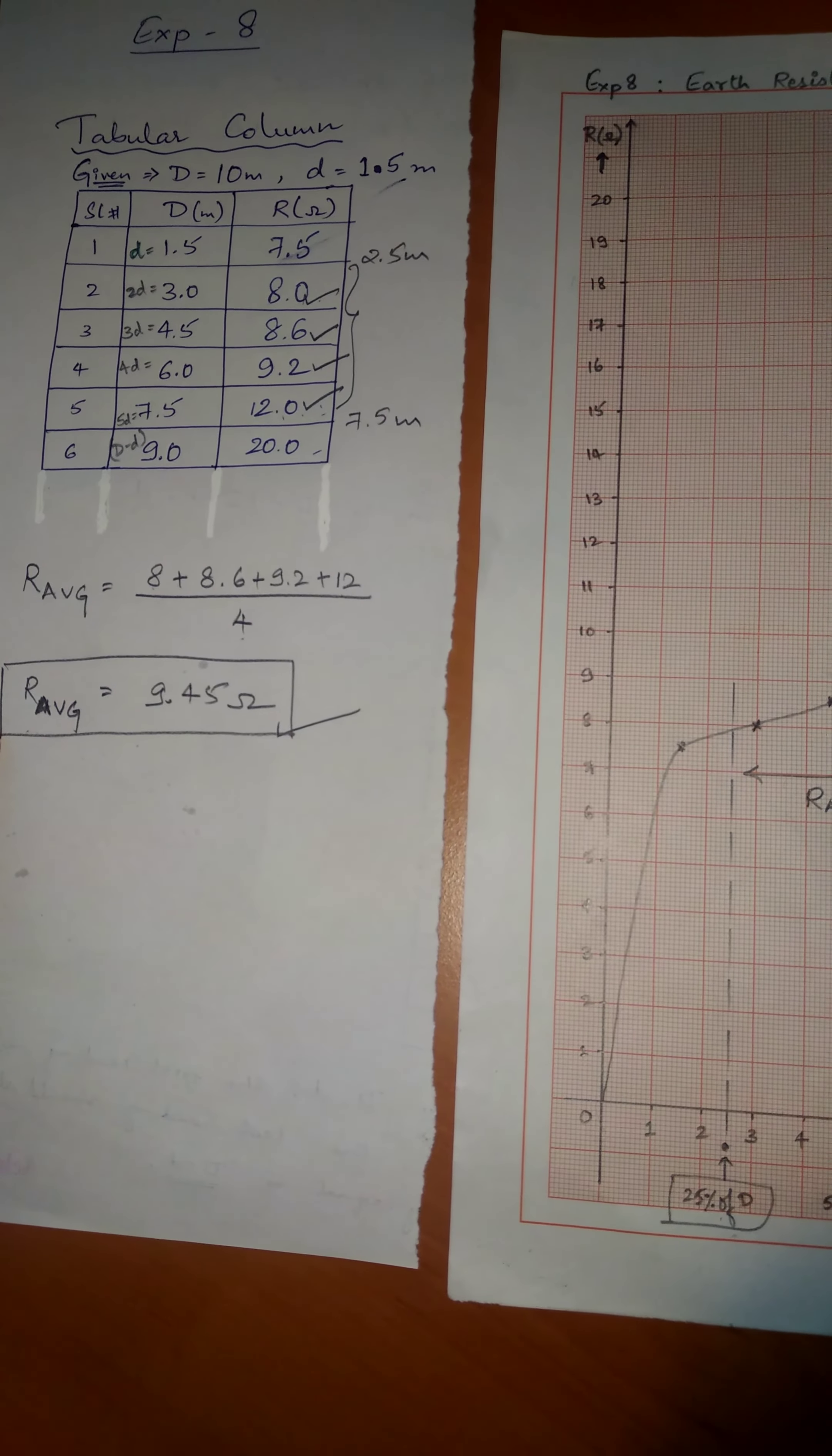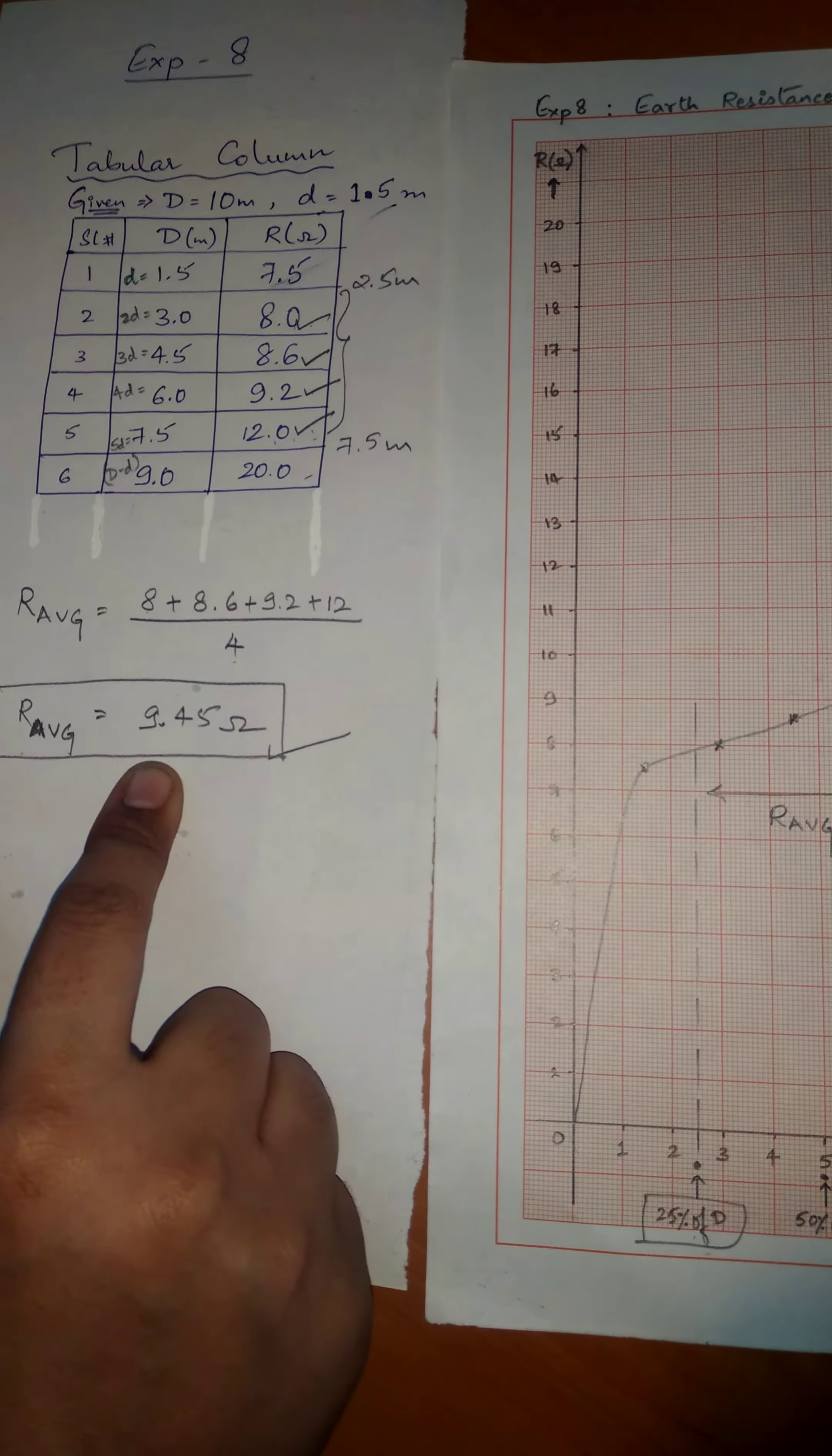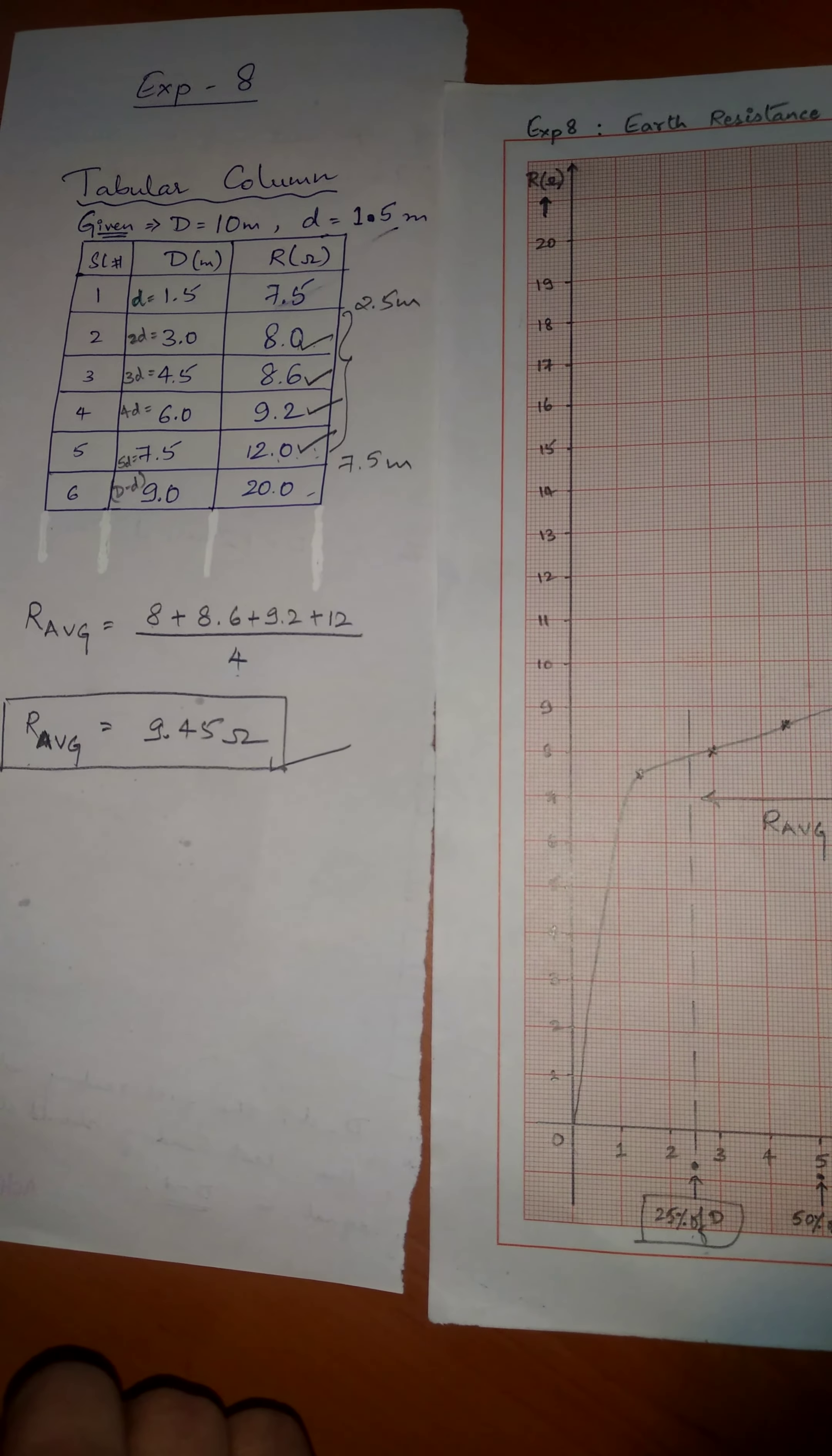That means to say, the resistance offered by the electrode E at that given point is 9.45 ohms, which is way too tolerable for the system to handle any sudden currents that flow into it. Thank you so much.